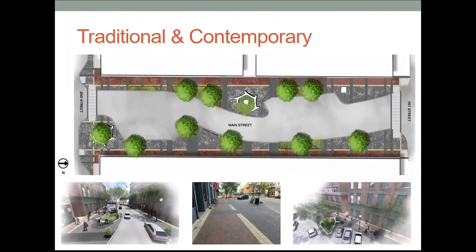As part of the planning and design for the project, several different options were looked at for the streetscaping components. Some of these items were more traditional and some were more contemporary. Through the public outreach, there was a lot of discussion and input from the business owners and the public. In the end, a blend of traditional and contemporary components was incorporated into the streetscape design improvements. In the middle section of the slide shown here, you can see a plan view from above of what those different components generally look like, and in the lower portions you can see renderings of how the improvements were expected to look. The final picture is from the actual pavers installed this past year and shows a close match to the design.